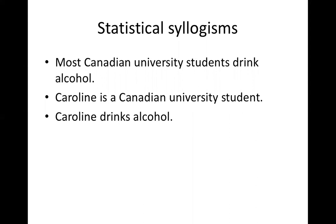Then we have statistical syllogisms: most Canadian university students drink alcohol; Caroline is a Canadian university student; therefore Caroline drinks alcohol. The argument is only partially correct — there are actually two conclusions. The second conclusion is that Caroline doesn't drink alcohol, because Caroline could be among the few who don't. So this argument is not as accurate as a deductive argument.